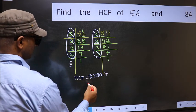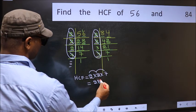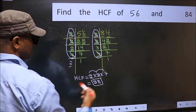So our HCF is 2 into 2, 4 into 7, 28 is our HCF.